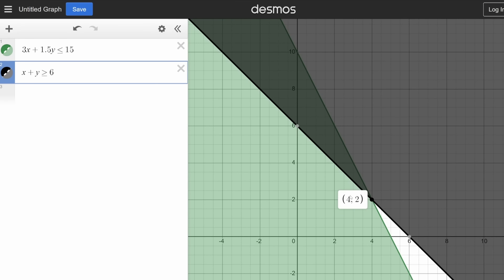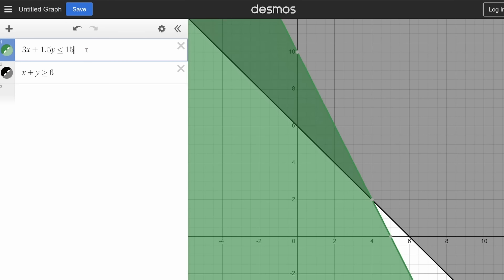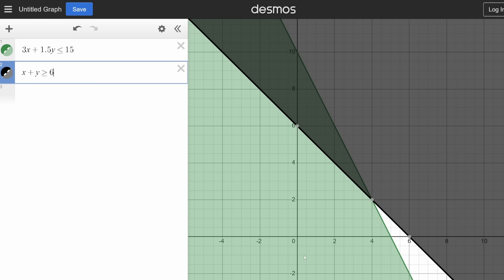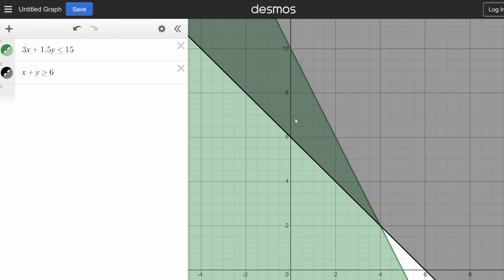So you can think of every single X coordinate as the number of apples we're buying and the Y coordinate as the number of bananas we're buying. So for example, this point right here means we're buying four apples and two bananas. And you can think of the green region as every combination within our budget and the black region as every combination where we're buying at least six fruits. And we're interested in the overlapping region, where we're simultaneously staying within our budget, but also buying enough fruit. And we're trying to find the most amount of bananas we can get while being within this overlapping region.